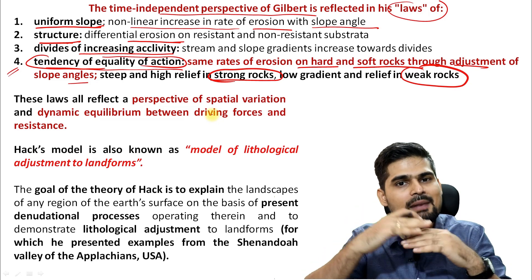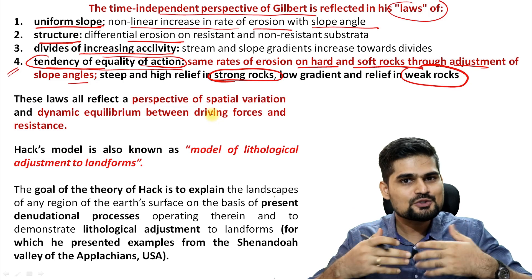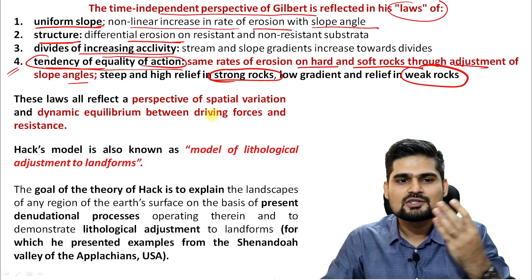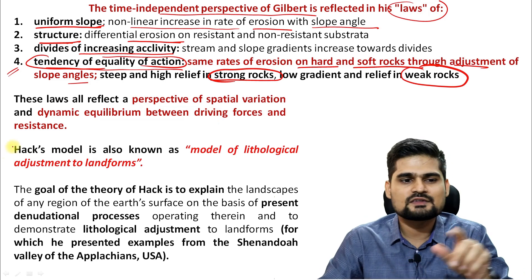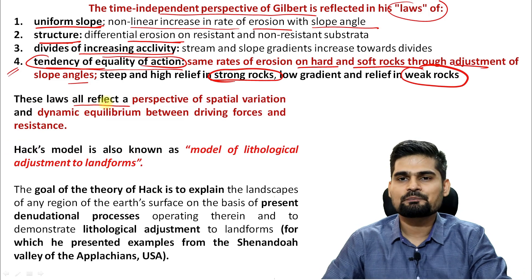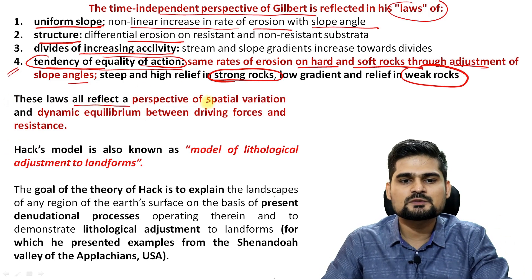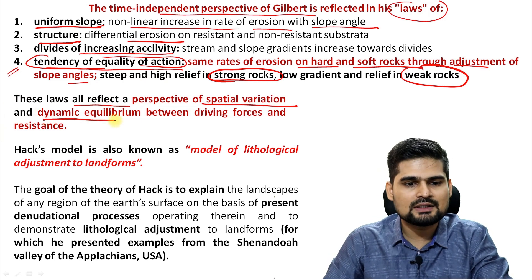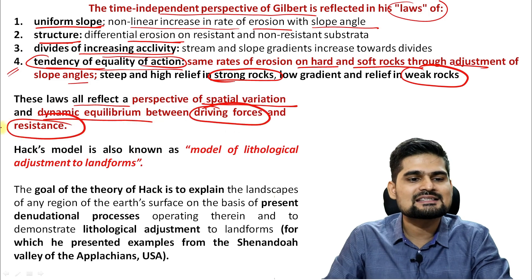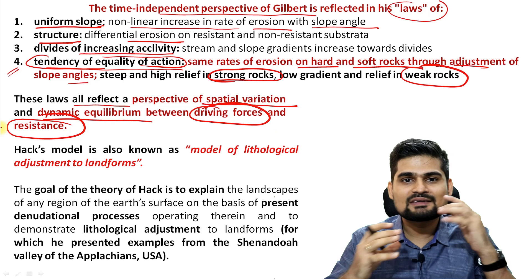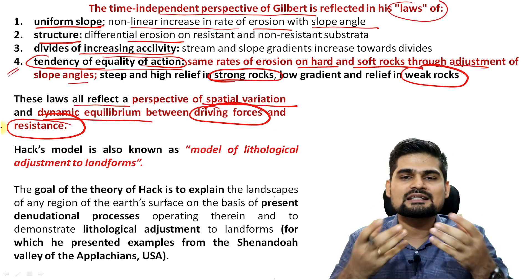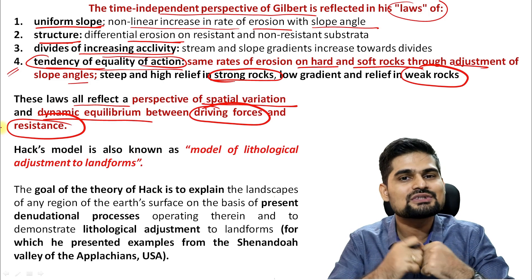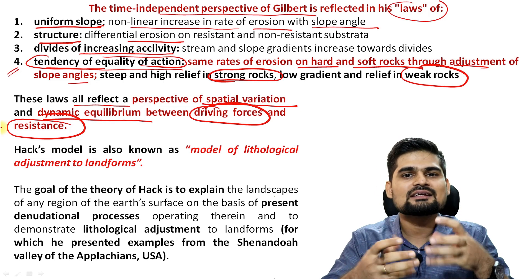The equality in action refers to whether erosion and rock resistance are balanced or one is dominating over the other. These four laws reflect the perspective of spatial variation and dynamic equilibrium between driving forces and resisting forces — recalling Gilbert's work. The driving forces are the erosional and denudational processes, while the resisting forces relate to rock structure, composition, and slope angle.